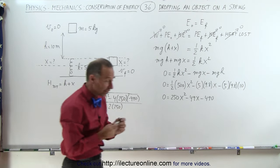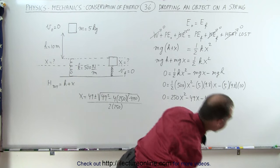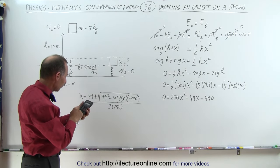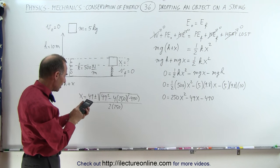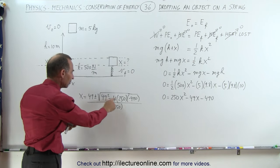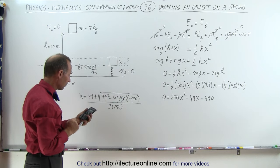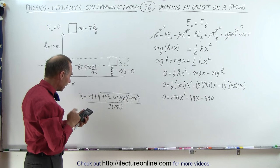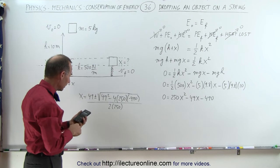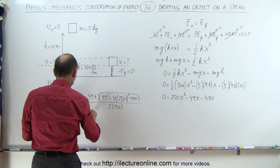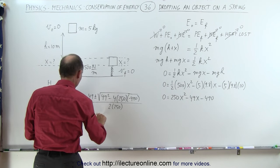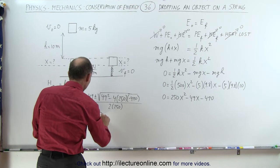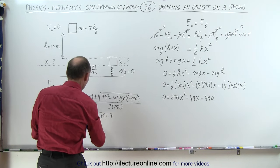All right now we're ready to solve that using our calculator. Starting with what's inside the radical we have 4 times 250 times 490. Notice that the negative sign will cancel out that negative sign. We add to that 49 squared and then we take the square root of that and so this ends up being x is equal to 49 plus or minus the square root of 701.7 all divided by 500.